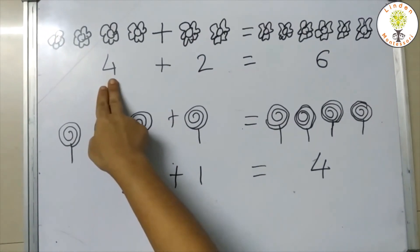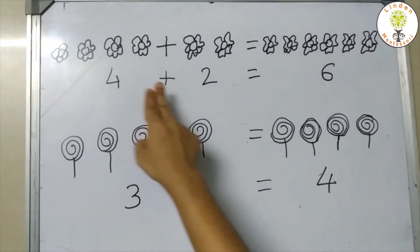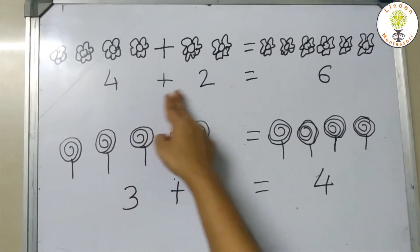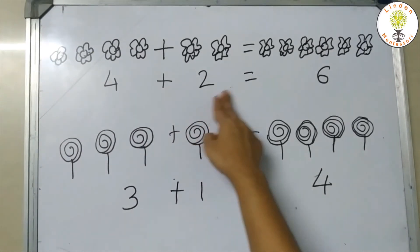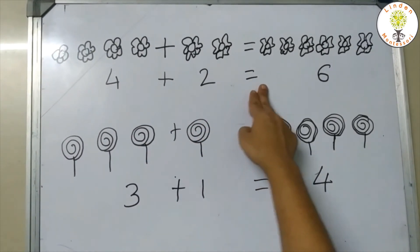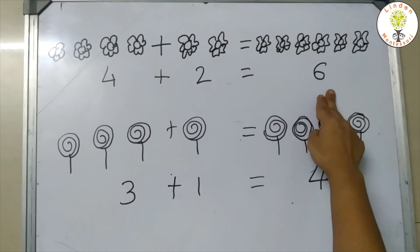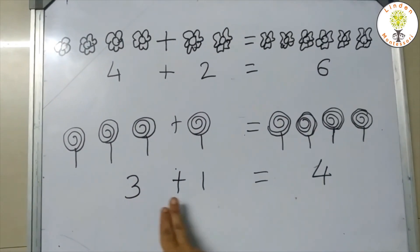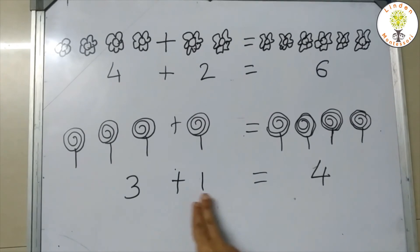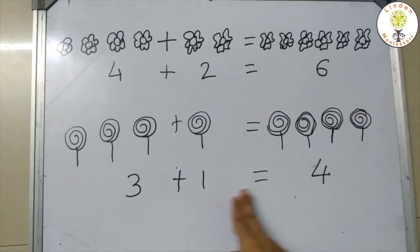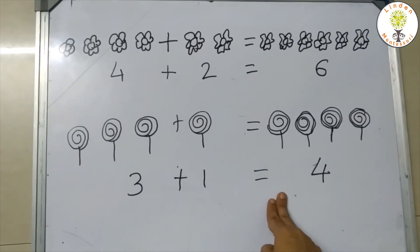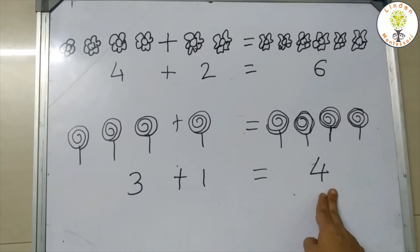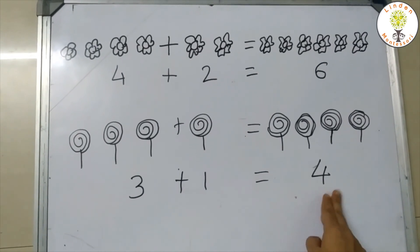Four plus two is equal to six. Three plus one is equal to four.